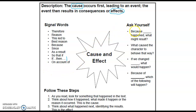You might ask yourself: because this happened, what might result or what did result? What caused the character or the person or the people to behave or act that way? If we changed an event, what would happen? Because of something happening, which of the following will happen? We want to be stopping and asking ourselves: because of this, what's happening now?